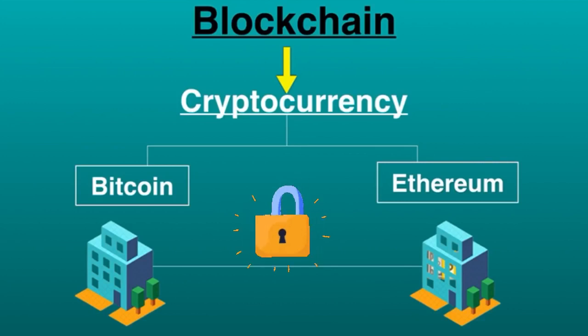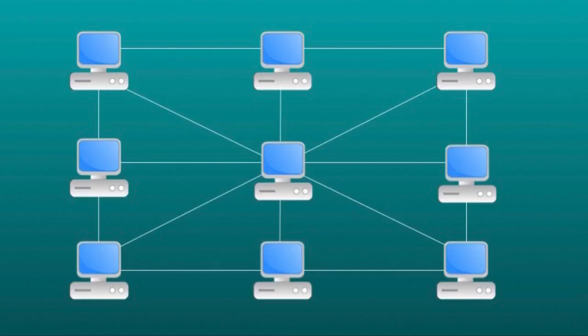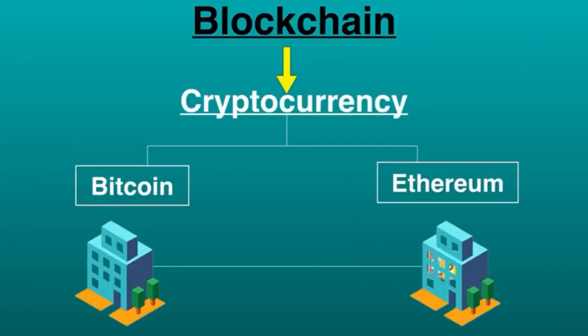Almost all cryptocurrencies, including Bitcoin, Ethereum, Bitcoin Cash, and Litecoin, are secured by blockchain networks. This means their accuracy is constantly being verified by a large amount of computing power.